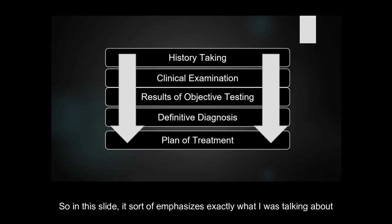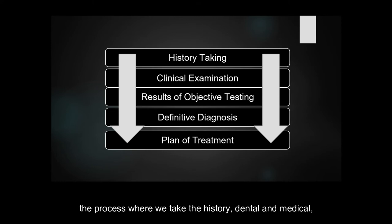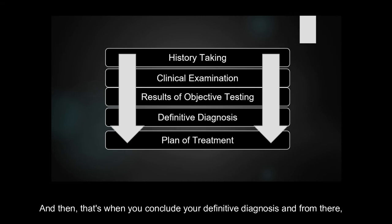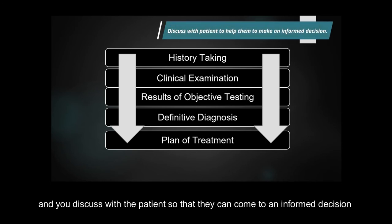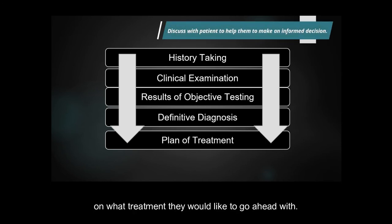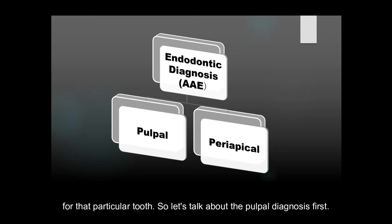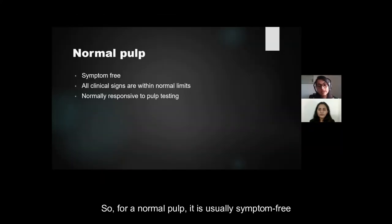This slide summarizes the entire diagnostic process: starting from taking dental and medical history, through clinical examination, objective testing, and radiographic findings, to arriving at a definitive diagnosis. From there, you plan the treatment and discuss it with the patient so they can make an informed decision on what they would like to proceed with. According to AAE endodontic diagnostic terms, you must include both a pulpal and a periapical diagnostic term for each tooth.